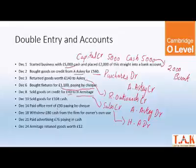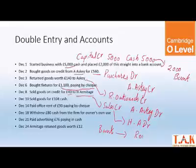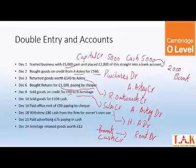Paid office rent £90, paying by cheque. The entry is bank credit — wait, it was paid by cheque, so it will be bank credit, and rent debit. Cash credit and rent debit.